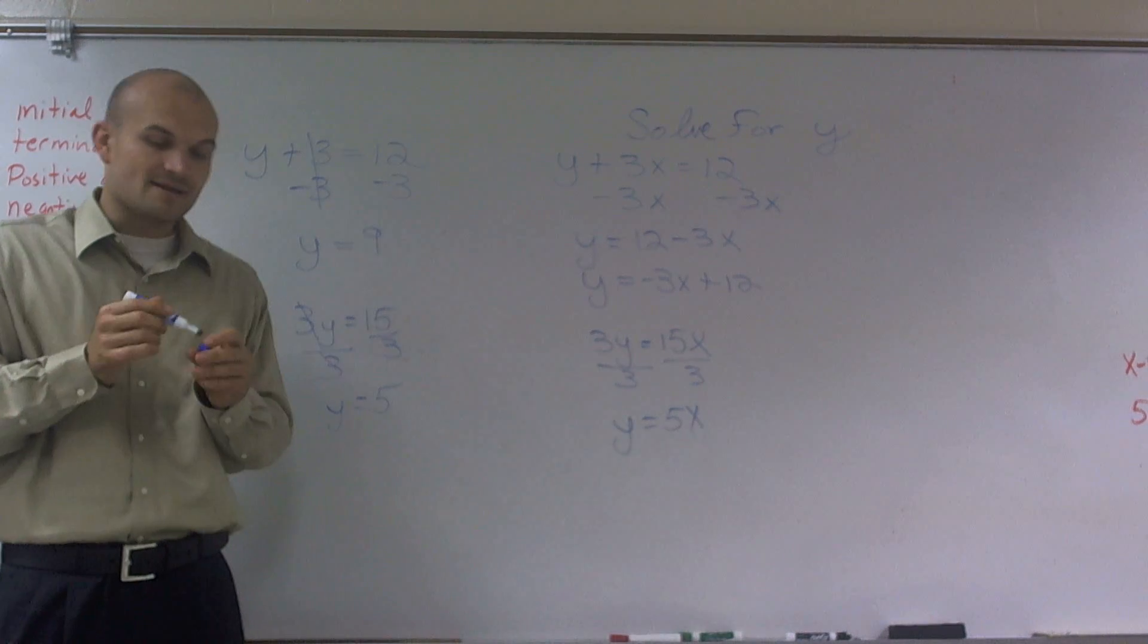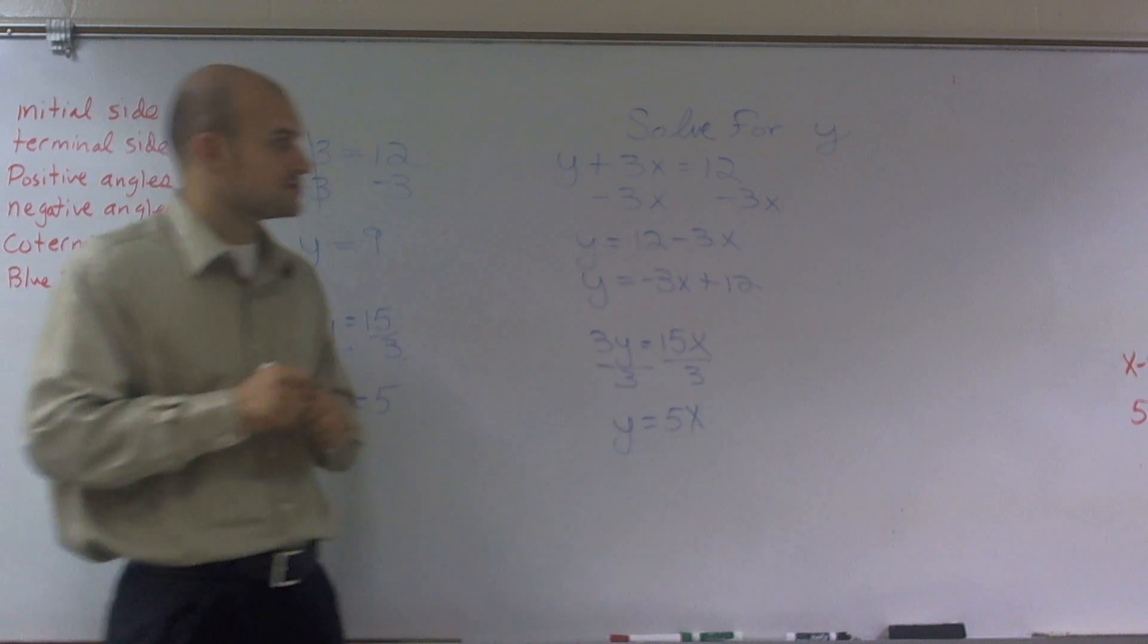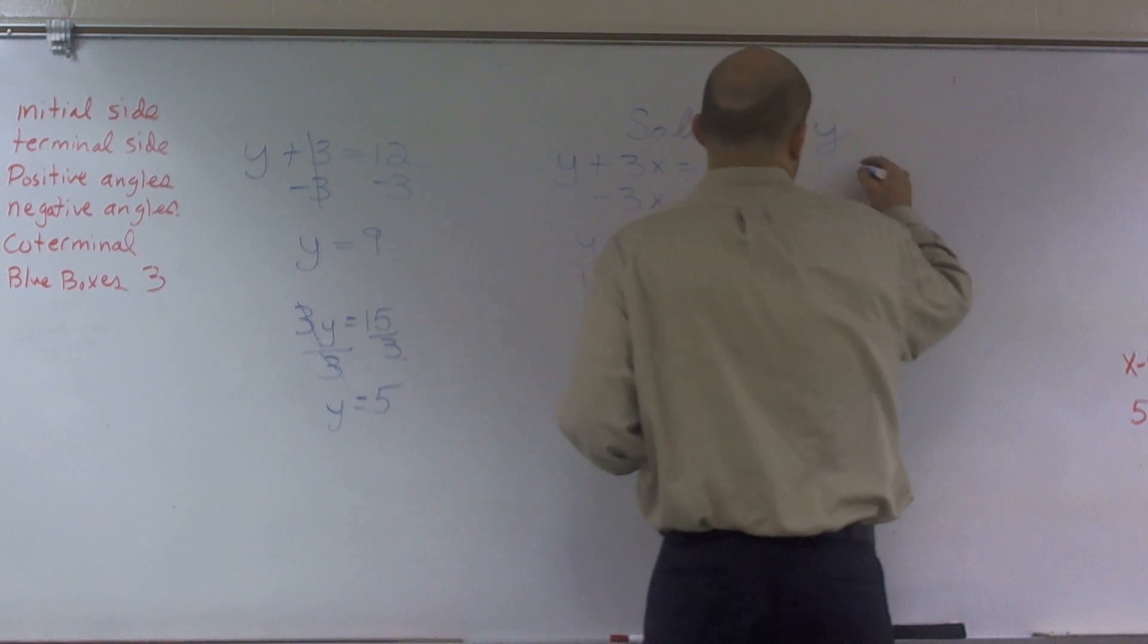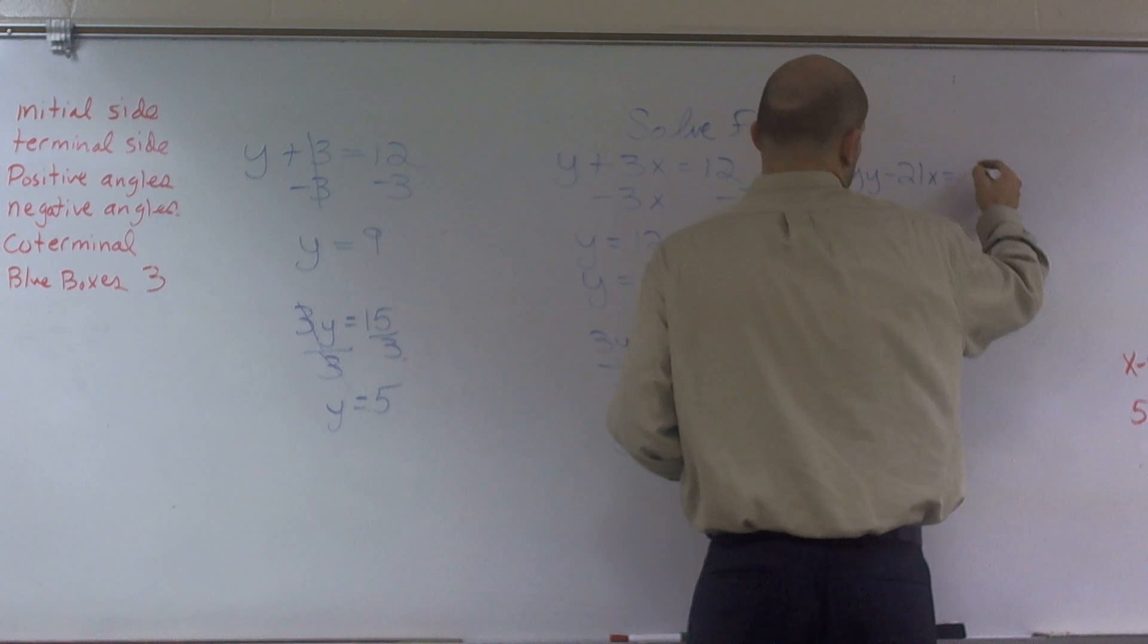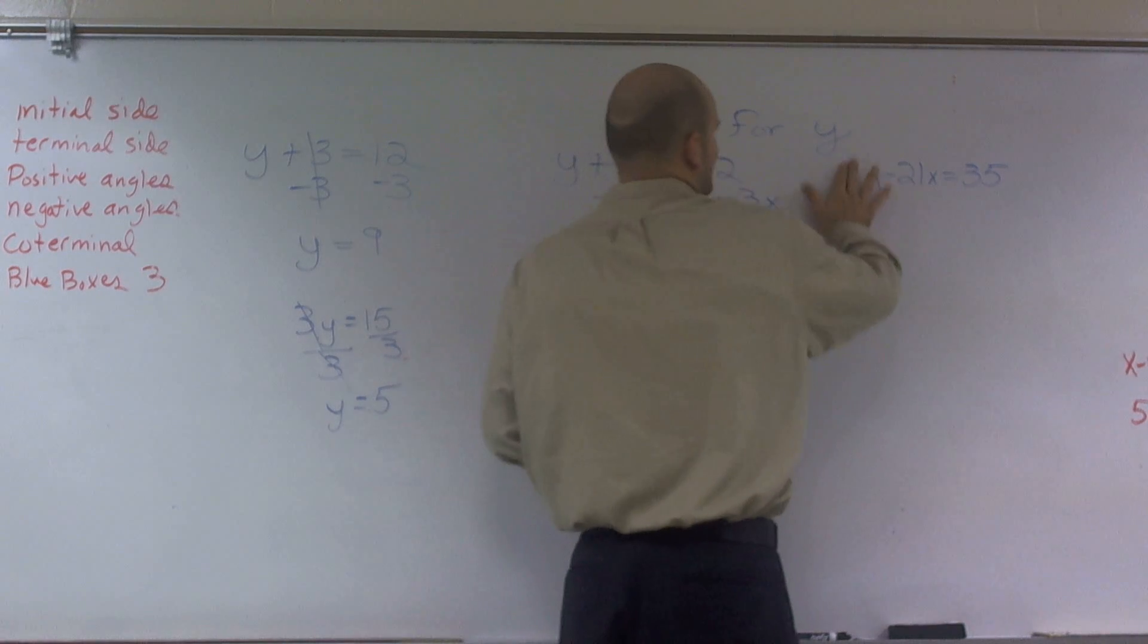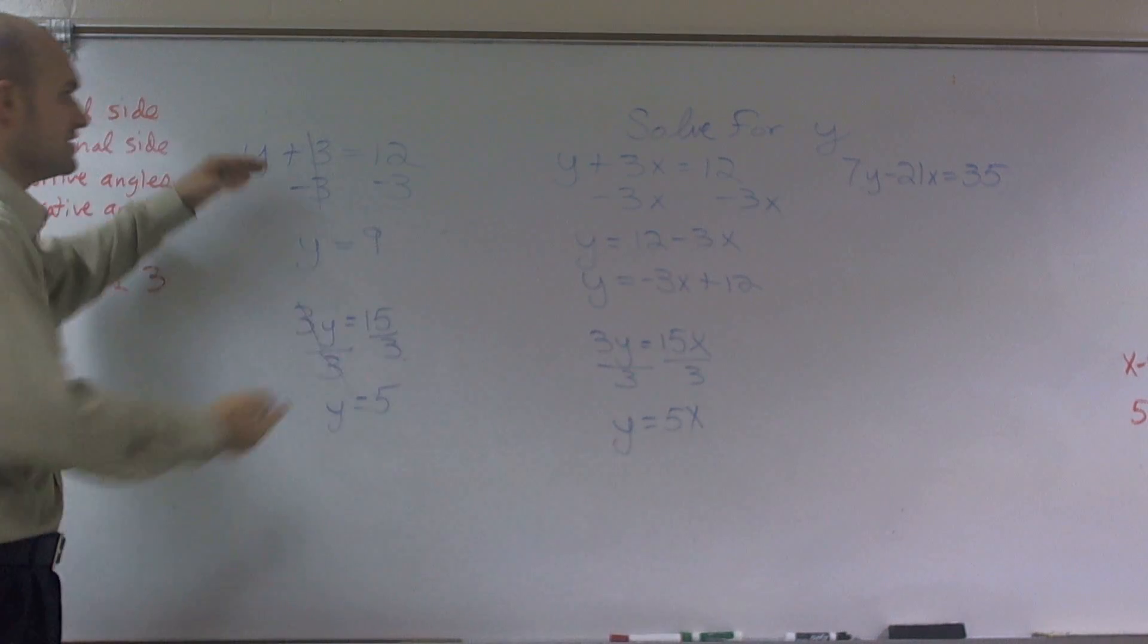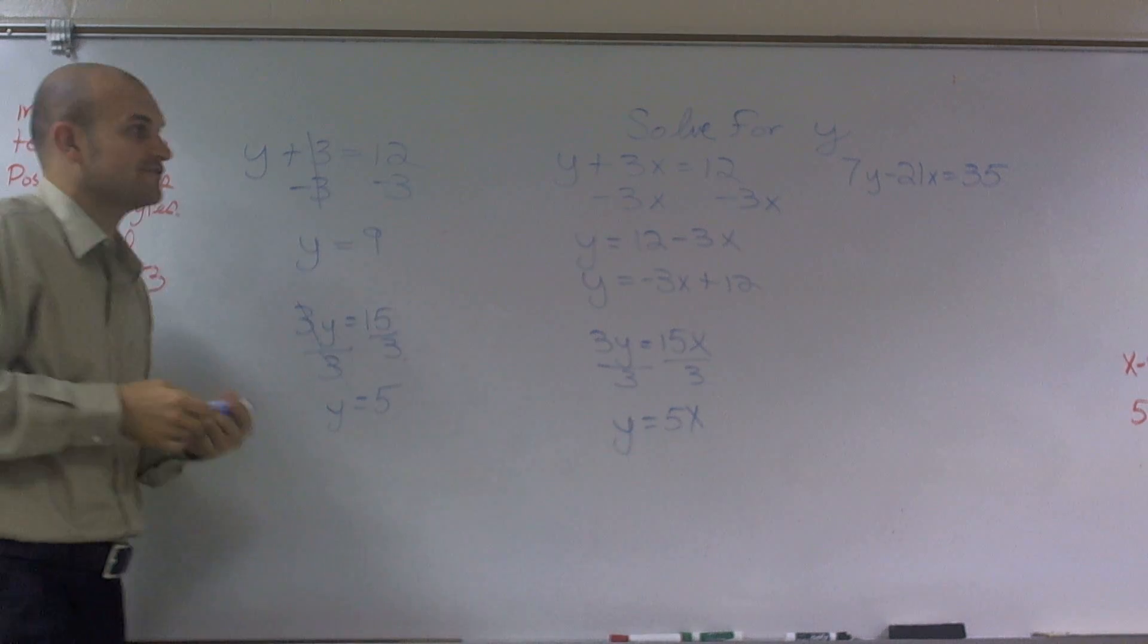So then, now what we're going to do is we're going to work on two-step solving literal equations. So the first one I gave you was 7y minus 21x equals 35. So the first thing we need to do, if you guys remember, always is undo addition and subtraction first, right? Always what you want to do first.